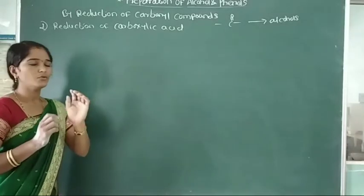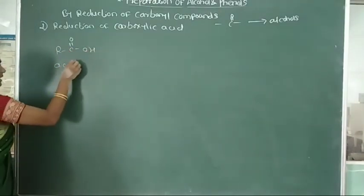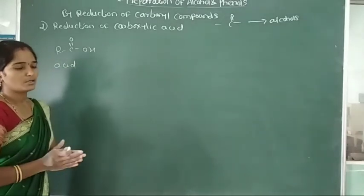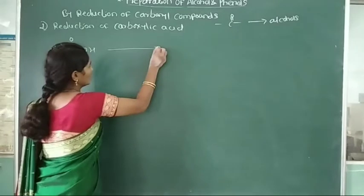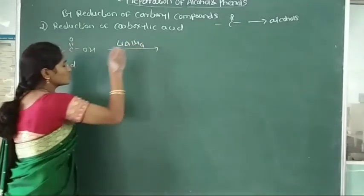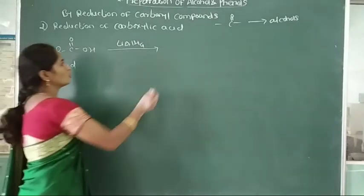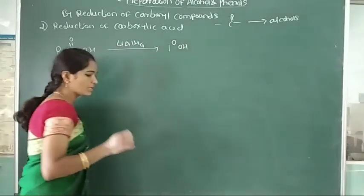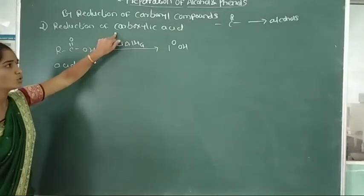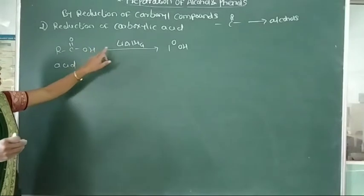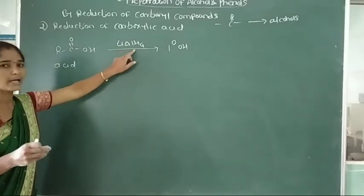For example, RCOOH — this is the functional group of carboxylic acid. This carboxylic acid uses lithium aluminium hydride as a strong reducing agent. This carboxylic acid is reduced using lithium aluminium hydride and is converted into primary alcohol. This carboxylic acid requires a strong reducing agent, that is lithium aluminium hydride, to convert it into primary alcohol.